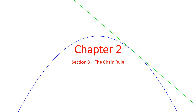Welcome back to section 3 of chapter 2. In this section, we're going to be learning about the chain rule. The chain rule, unlike the power rule, isn't how we find the derivative of a specific type of function. Rather, it's a process that we use almost all the time, with almost everything, because we use it when we have composite functions — when we have a function inside of another function.